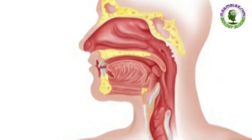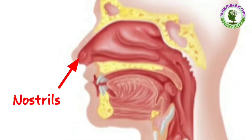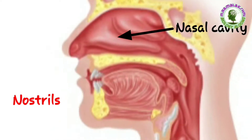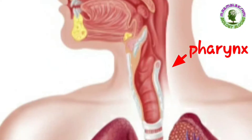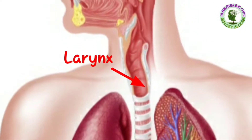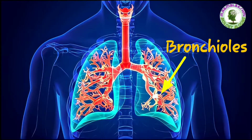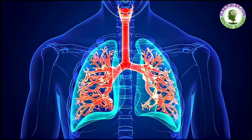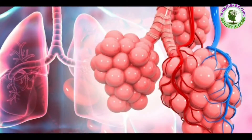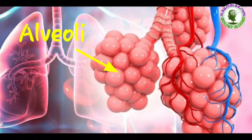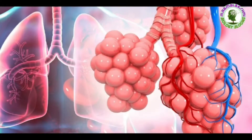In inhalation, air firstly goes through nostrils, nasal cavity, pharynx, larynx, vocal cord, bronchi and bronchioles, then enters into alveoli which are the structural and functional units of the lungs. The exchange of gases occurs here.